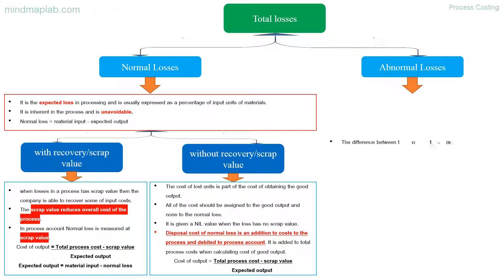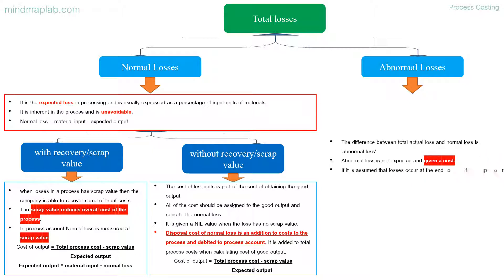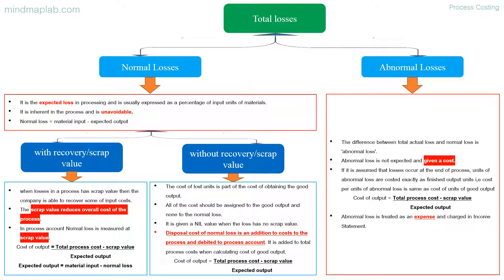The difference between total actual loss and normal loss is abnormal loss. Abnormal loss is not expected and is given a cost. If it is assumed that losses occur at the end of the process, units of abnormal loss are costed exactly as finished output units — that is, cost per unit of abnormal loss is the same as cost per unit of good output. Cost of output equals total process cost minus scrap value, divided by expected output. Abnormal loss is treated as an expense and charged in the income statement.